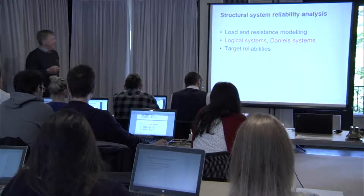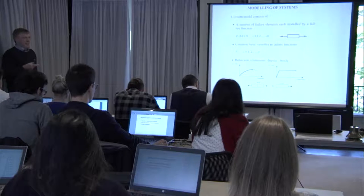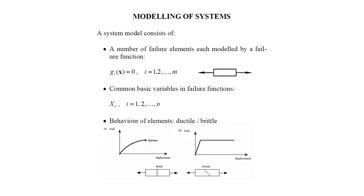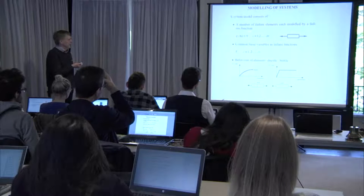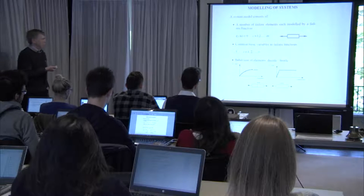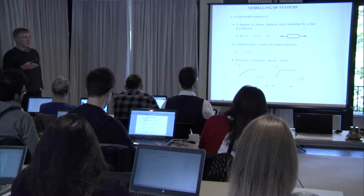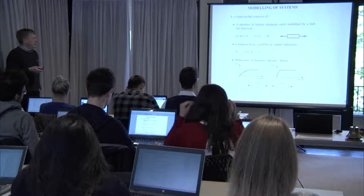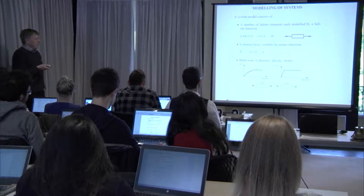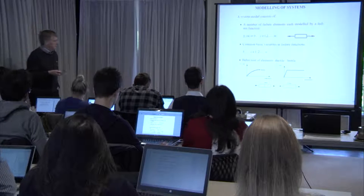The next part is related to systems. A number of components are considered, and the probability of failure for one component with a limit state equation has been shown previously. Components can model real structural elements but also other failure modes not necessarily structural. The stochastic behavior of components is characterized by limit state equations involving a vector of stochastic variables x.